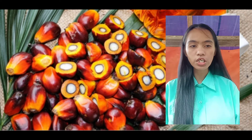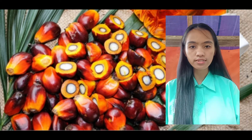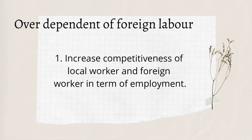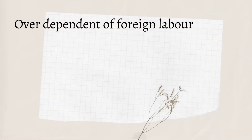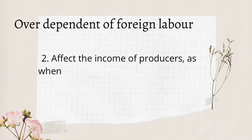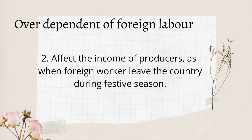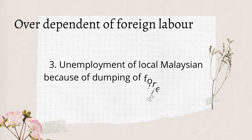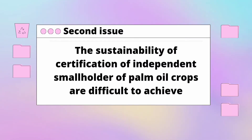The first issue is that labor requirements in the palm oil plantation sector have been monopolized by foreign workers. The issue of overdependence on foreign labor brings further consequences: first, increased competitiveness between local and foreign workers in terms of employment; second, it affects the income of producers when foreign workers leave the country during festive seasons; third, unemployment of local Malaysians due to the influx of foreign workers.